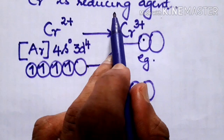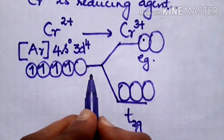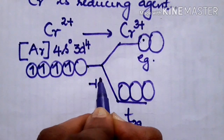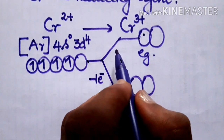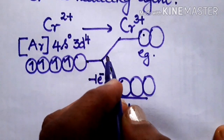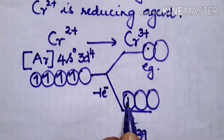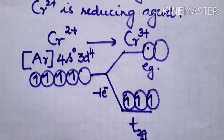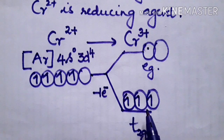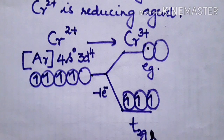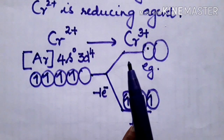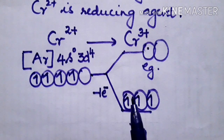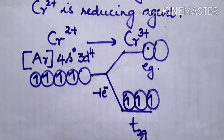When Cr²⁺ acts as a reducing agent, it gets oxidized by losing one electron to become Cr³⁺ with a 3d³ configuration. The three remaining electrons occupy only the t2g orbitals. Since t2g has exactly three degenerate orbitals and is now half-filled with one electron each, it gives extra stability. Therefore, chromium easily loses an electron and acts as a reducing agent.